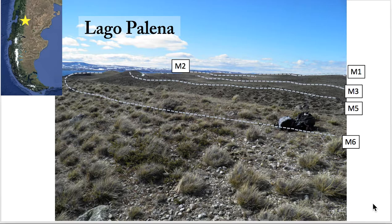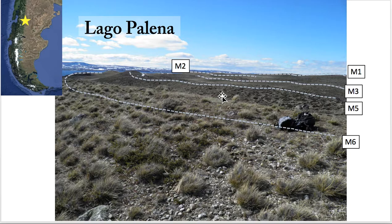These piles of sediment and rock are moraines. We can identify sequences of moraines like this one — we have M1, M2 — marking the past positions of the glacier. This is from Lago Polena, from preliminary work that Rodrigo Saterrez and Matteo Martini from the University of Córdoba and I did in September.